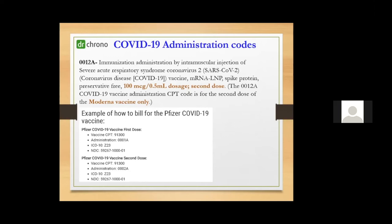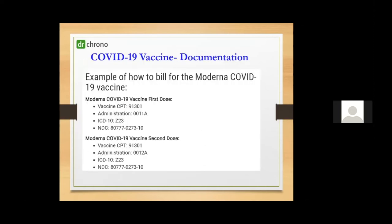Let's see an example of how it would look on a claim. For the Pfizer vaccine first dose, the vaccine code would be 91300, administration code 0001A, ICD-10 Z23 as the exposure code, and the NDC — the national drug code — for the first dose. For the second dose, the vaccine code remains 91300, administration code is 0002A, ICD-10 Z23, followed by the NDC code. Similarly for Moderna, both first and second dosage have their respective vaccine, administration, ICD, and NDC codes.